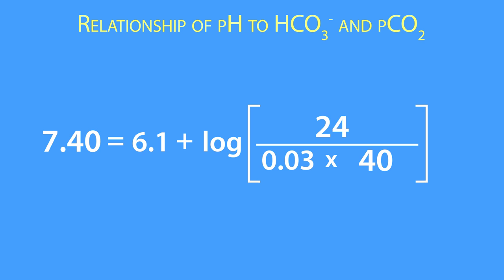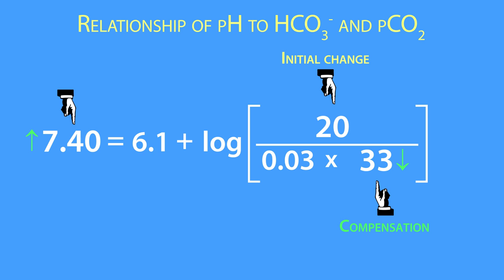For example, if the bicarbonate concentration decreases, it will lead to a decrease in plasma pH. So to correct the plasma pH, a decrease in the partial pressure of CO2 is required. On the other hand, if the partial pressure of CO2 increases, an increase in bicarbonate is required to compensate or correct the pH.